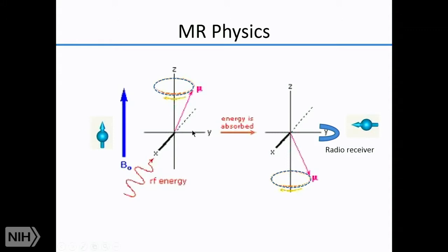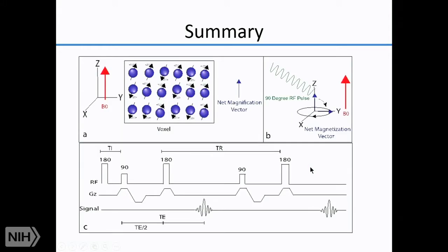We apply radio frequency energy to the aligned spins. Each spin can be viewed as a vector precessing around the magnetic field at a fixed frequency. If you interrogate it with RF energy at the same frequency, you can deviate it away from the z-axis — all the way to the x-axis or even the opposite direction. As recovery occurs, you detect the signal with a radio receiver that detects this precessing spin.